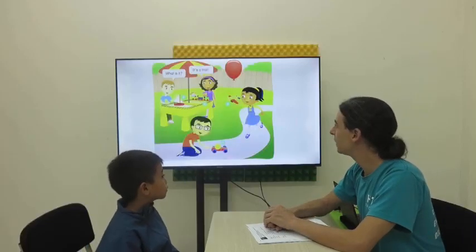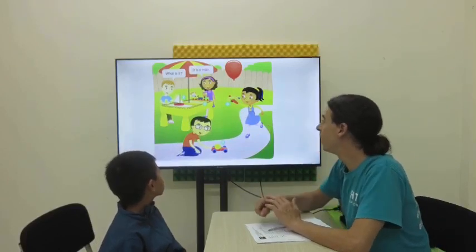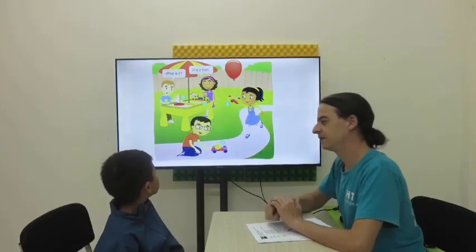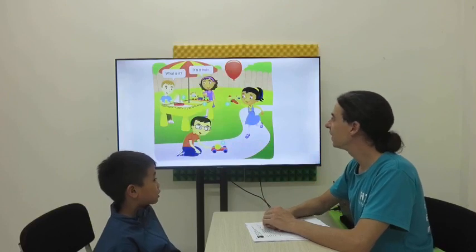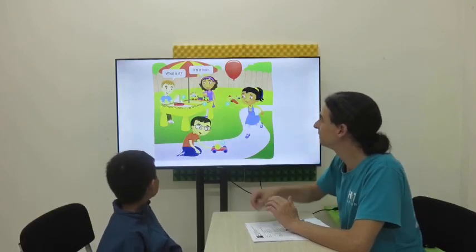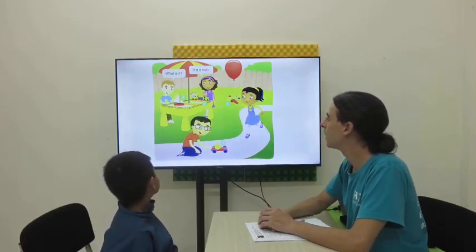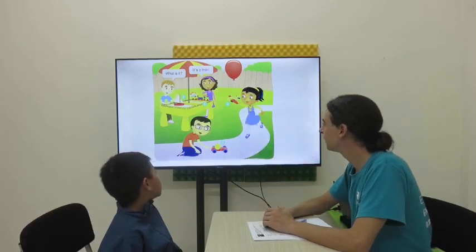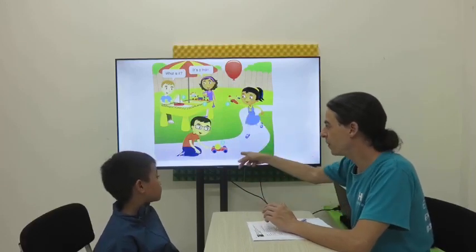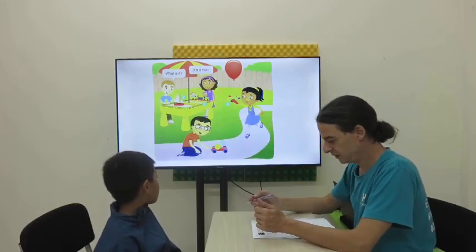Alright, number one. What is number one? Number two. It's a boat. Number three. It's a jet. Number four. It's a car. Excellent.